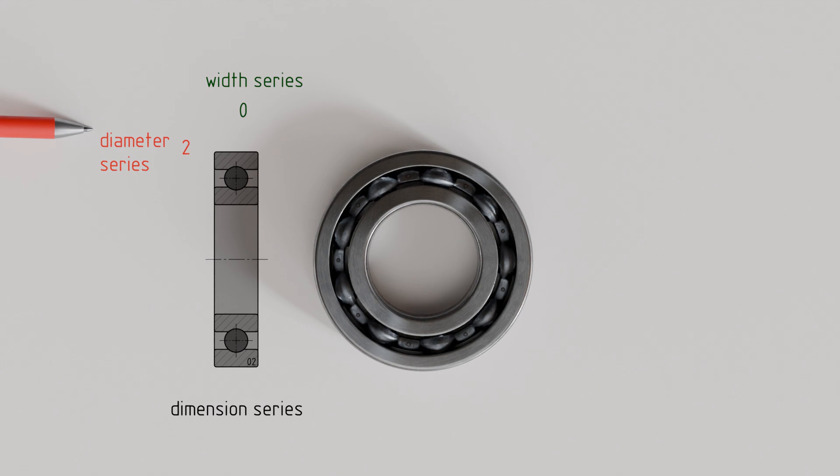In the following, we omit the complete representation of the bearing and show it without rolling elements, so that only the relevant dimensions are visible: the diameter of the inner ring, the outer ring, and the width of the bearing.